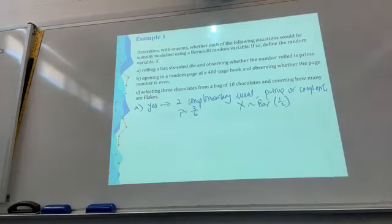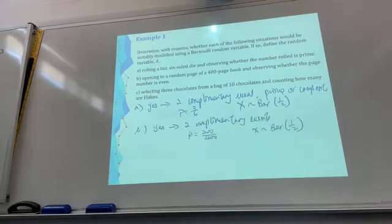Opening to a random page of 400 page book and observing whether the page number is even. It has to be because it's odd and even only. So the probability is 200 over 400.